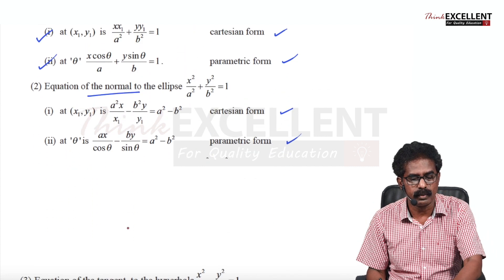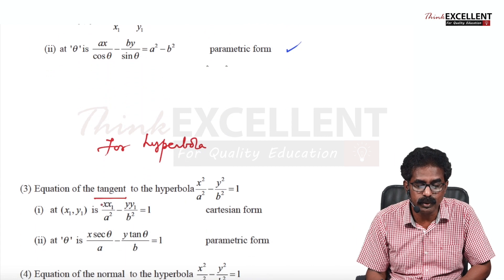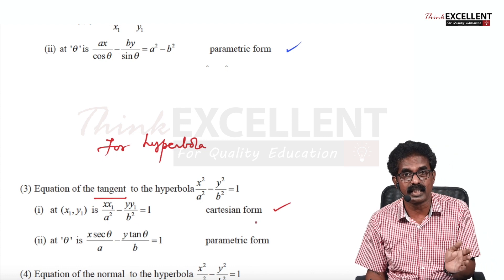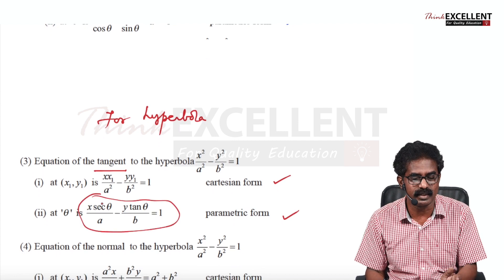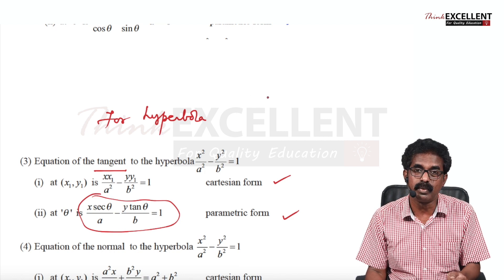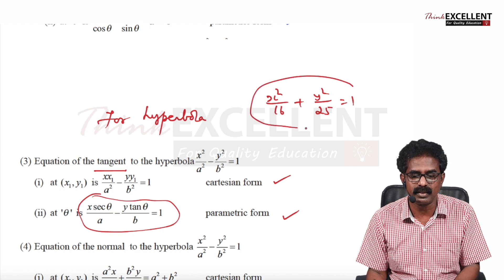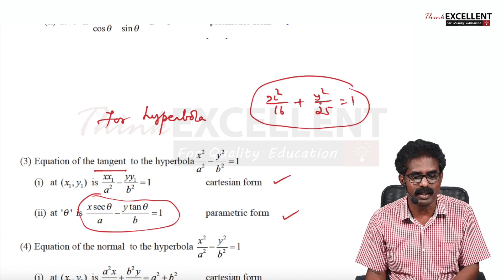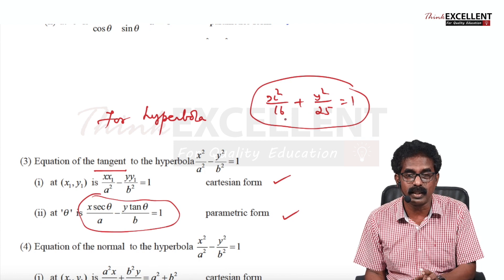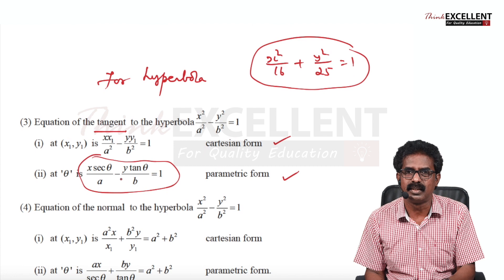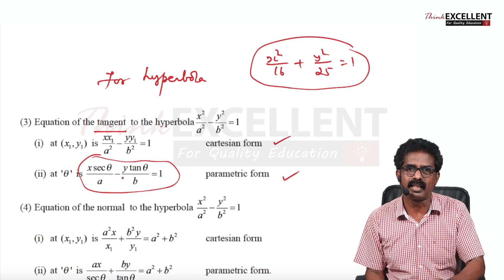For example, an ellipse X²/16 + Y²/25 = 1 — this is the second type since denominator under Y² is greater. They give a value of θ; just substitute into the formula. The key is: learn the formula, and the sums become very simple — just write the formula and substitute. That's all.